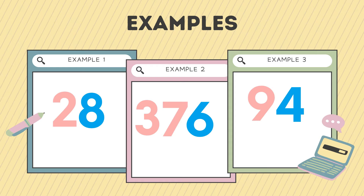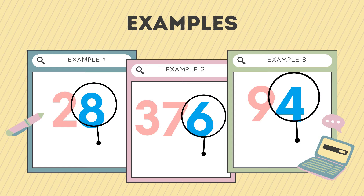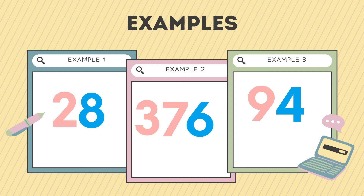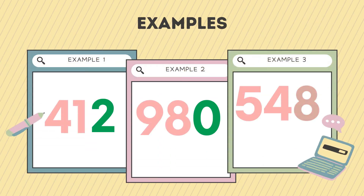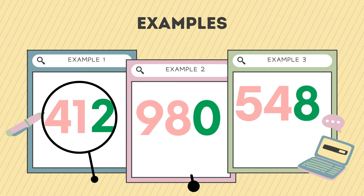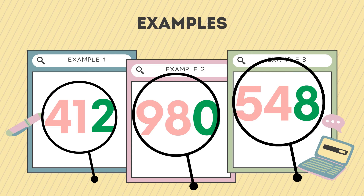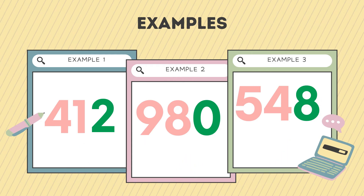Here, 28, 376, and 94 are ending in four, six, and eight — therefore these numbers are divisible by two. Here, 412, 980, and 548 are ending with two, zero, and eight. If a number ends with zero, two, four, six, or eight, then it is divisible by two. Therefore, 412, 980, and 548 are all divisible by two.